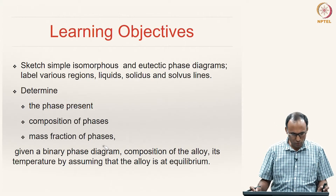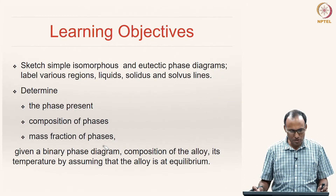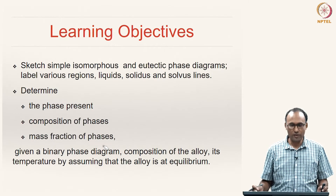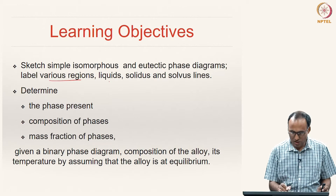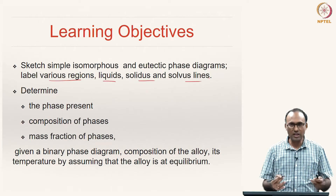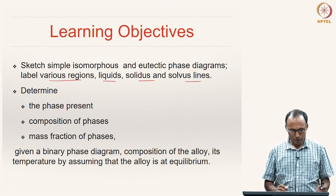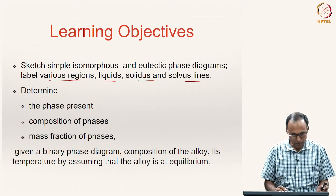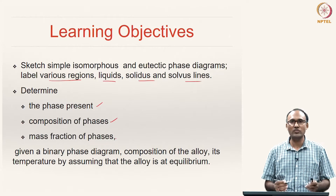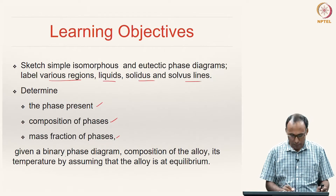The learning objectives of this module are as follows. By the end of this module we should be able to sketch simple isomorphous and eutectic phase diagrams. We should be able to label various regions such as liquidus, solidus, solvus lines, single phase regions, two phase regions, and so on.